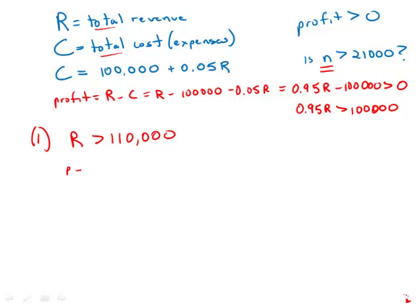The unit price could be $2, in which case we sold over 50,000 units, or the unit price could be $5,000, in which case we sold only 22 units. Without knowing the individual price, we can say absolutely nothing about the number of units sold. So statement number one by itself is simply insufficient.